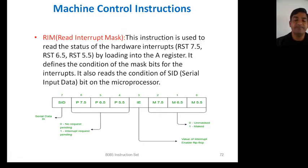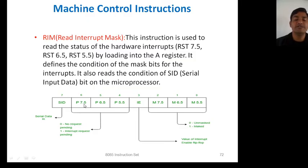The format of the RIM instruction: bit 7 is SID (serial input data). Bits 6, 5, and 4 indicate the condition of each interrupt — whether they are pending or not. If the value is 1, the interrupt request is pending; if 0, no request is pending. For example, if RST 6.5 bit is 1, it means RST 6.5 interrupt is pending and needs to execute.